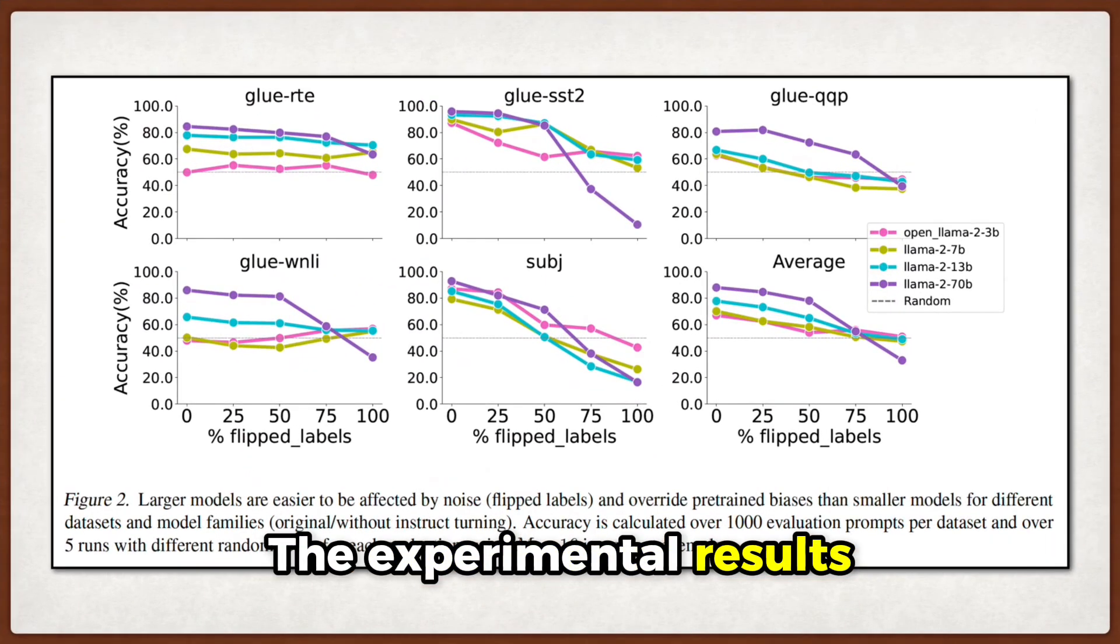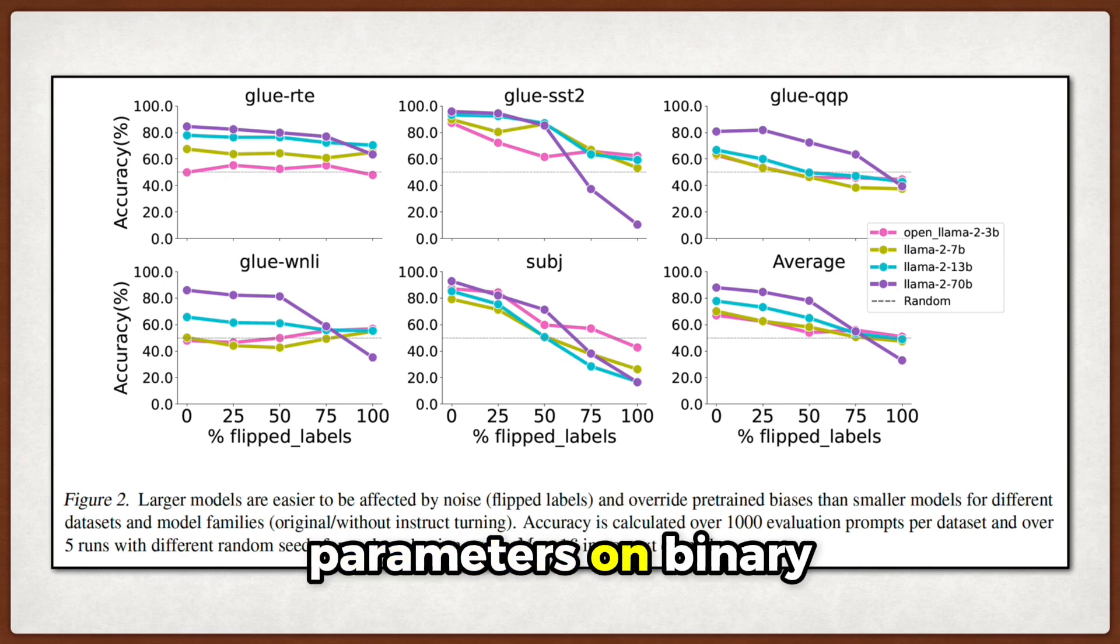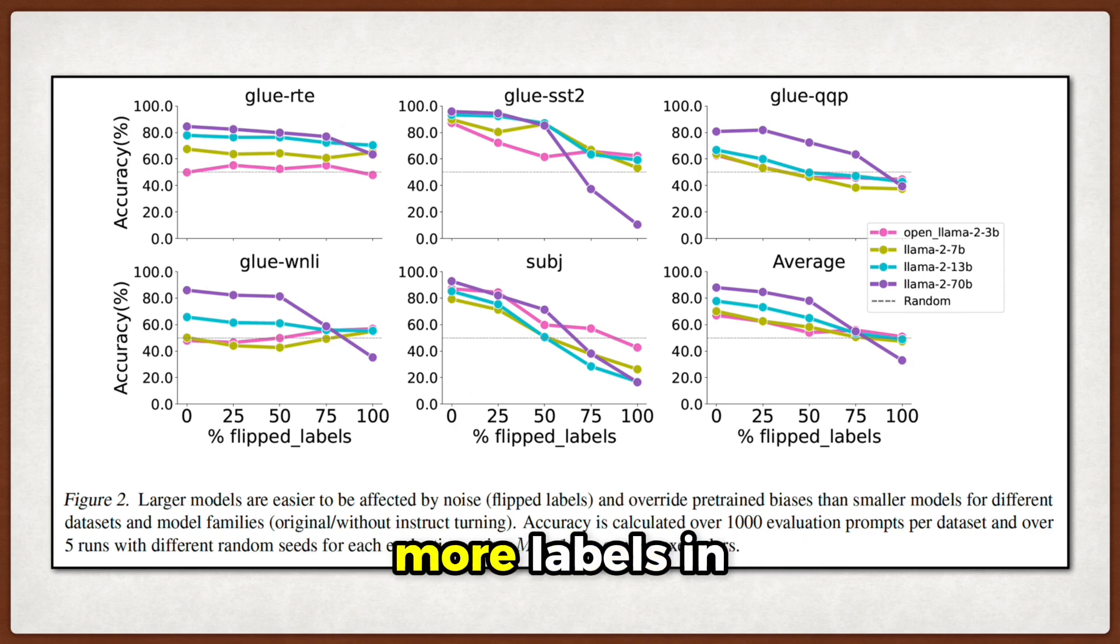The experimental results really drive this home. When they test LAMA models from 3B to 70B parameters on binary classification tasks and progressively flip more labels in the prompts, the larger models consistently show steeper performance drops.